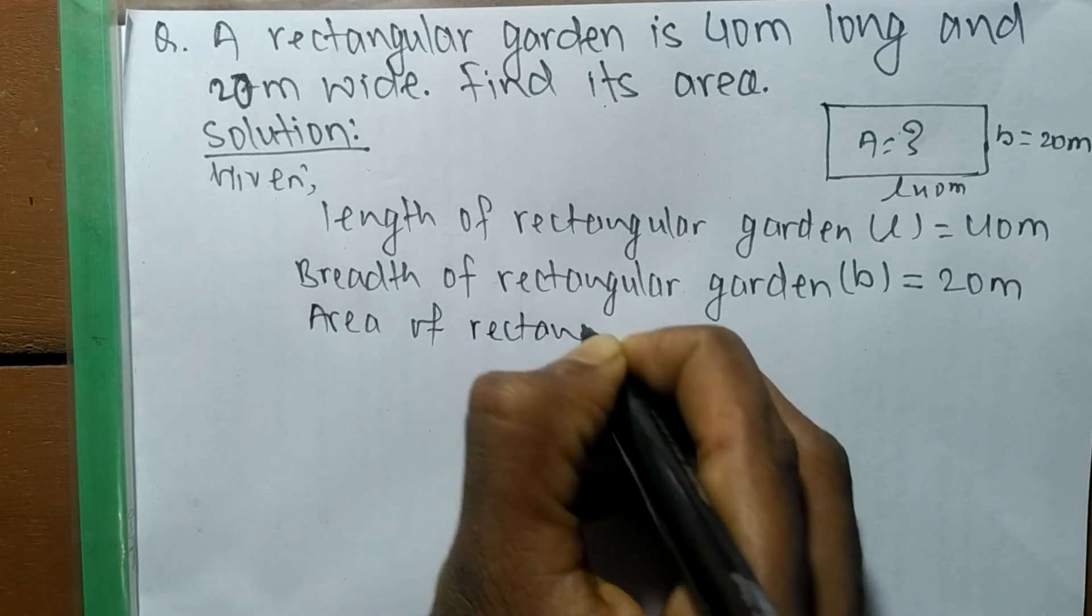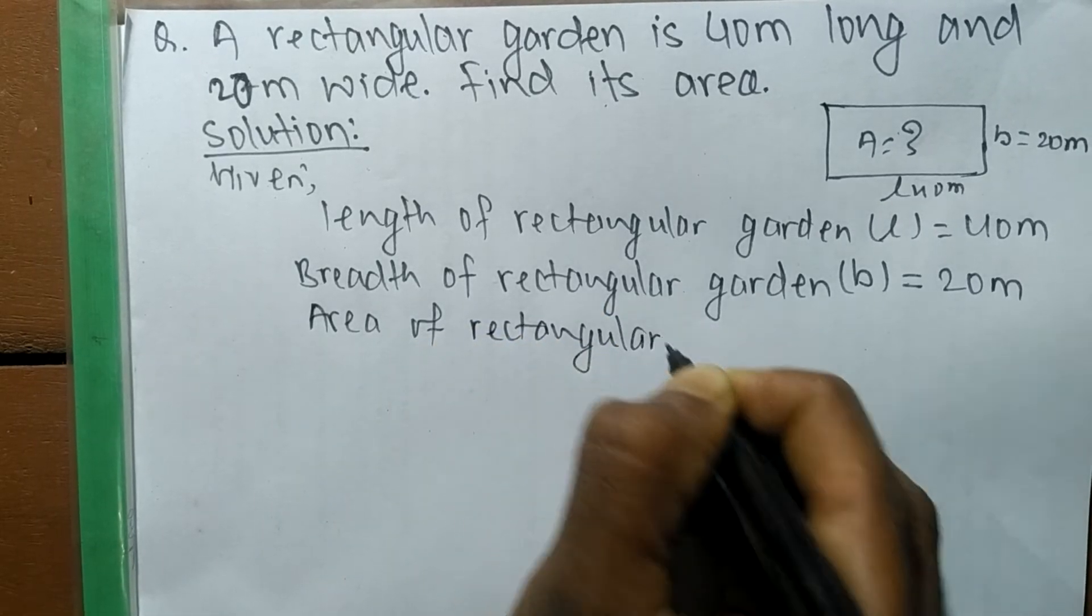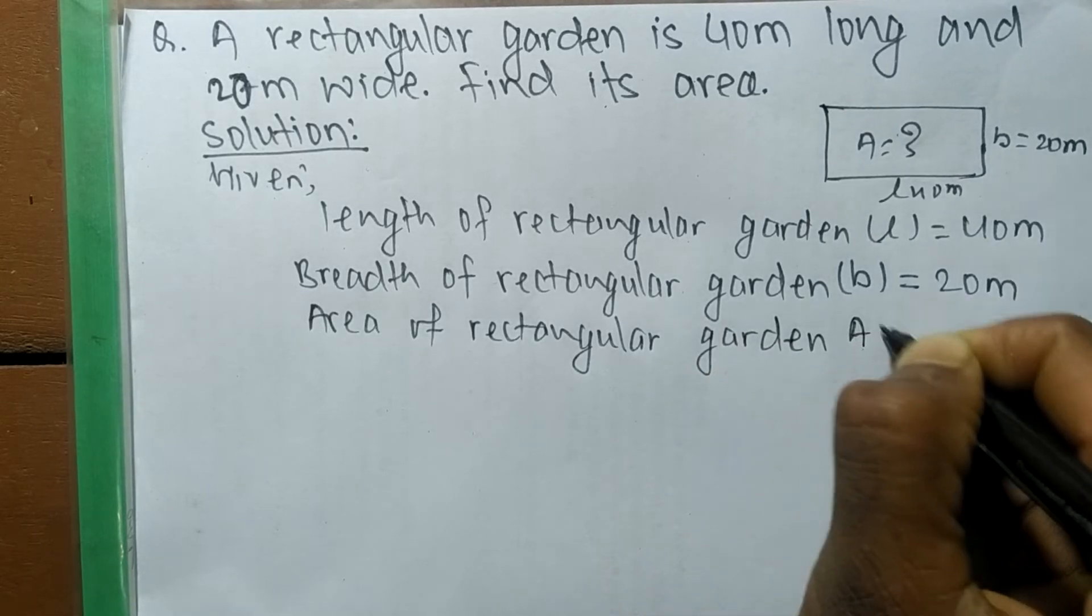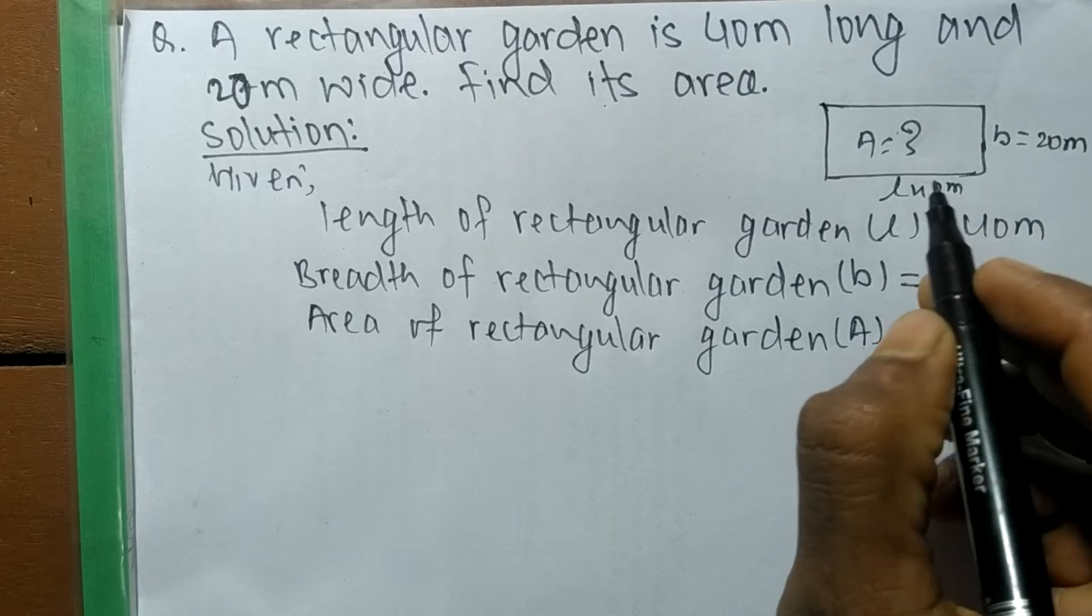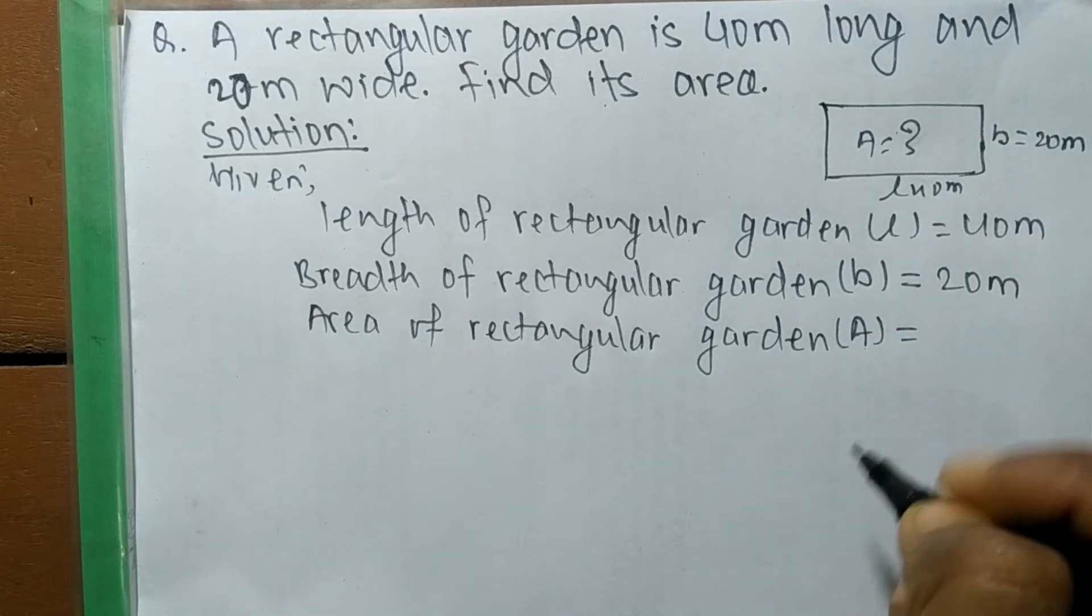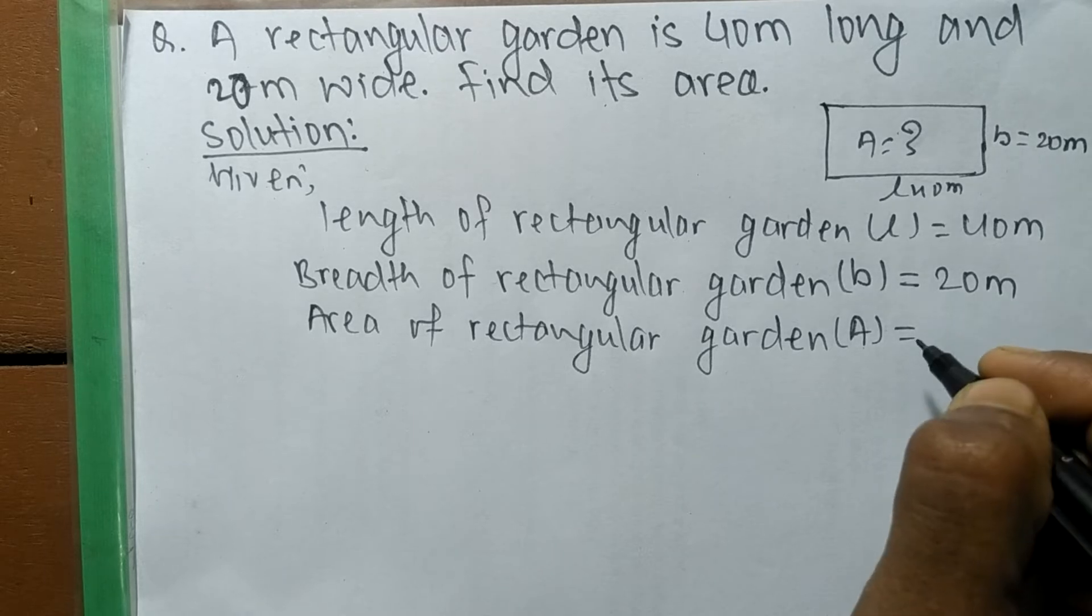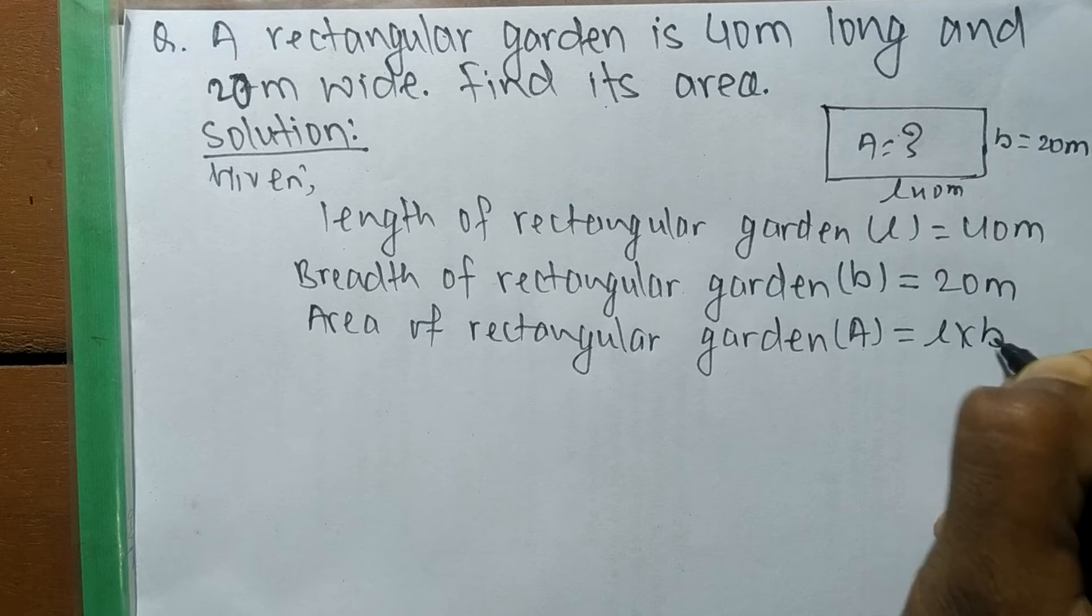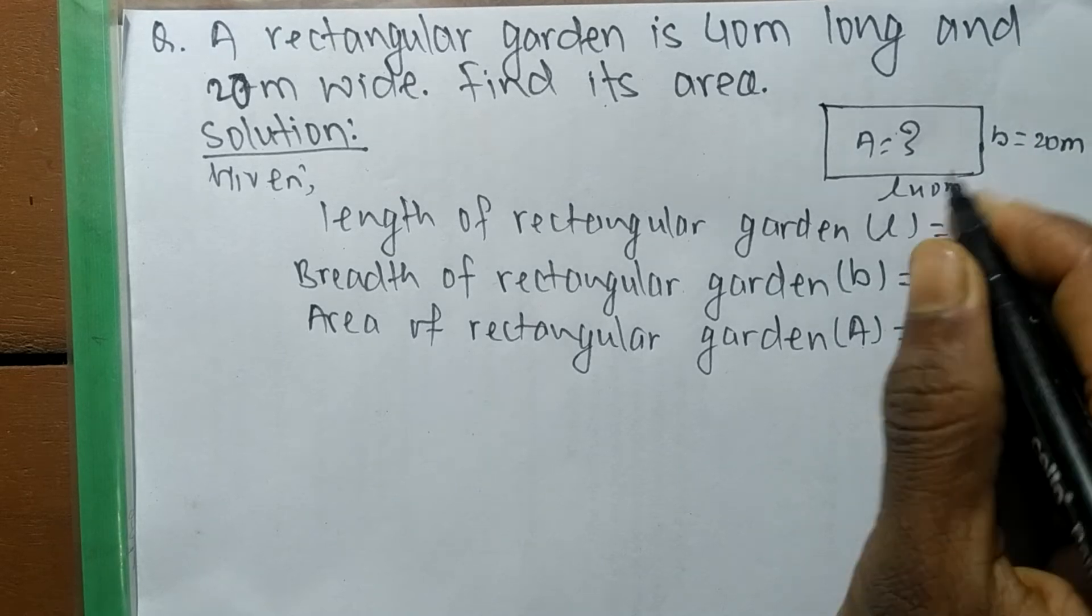Now area of a rectangular garden, we denote it by A. So here is a rectangular garden, means we have to use the formula of a rectangle. Area is equal to L times B, means length times breadth.